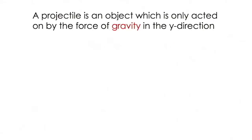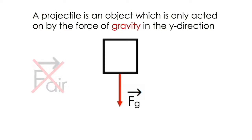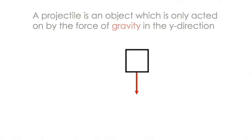For the purposes of this example and most problems in secondary school physics, a projectile is defined as an object that is only acted on by the force of gravity in the y direction. Most problems in secondary school ignore air resistance, so we're not going to consider that here.